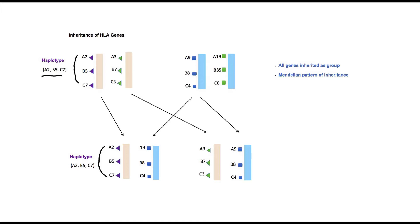Each child has two haplotypes, one on each chromosome. These genes are inherited with a Mendelian pattern of inheritance, so each sibling has a 25% chance of having a similar HLA profile to other siblings. For this reason, the possibility of finding a similar HLA profile among siblings is higher.